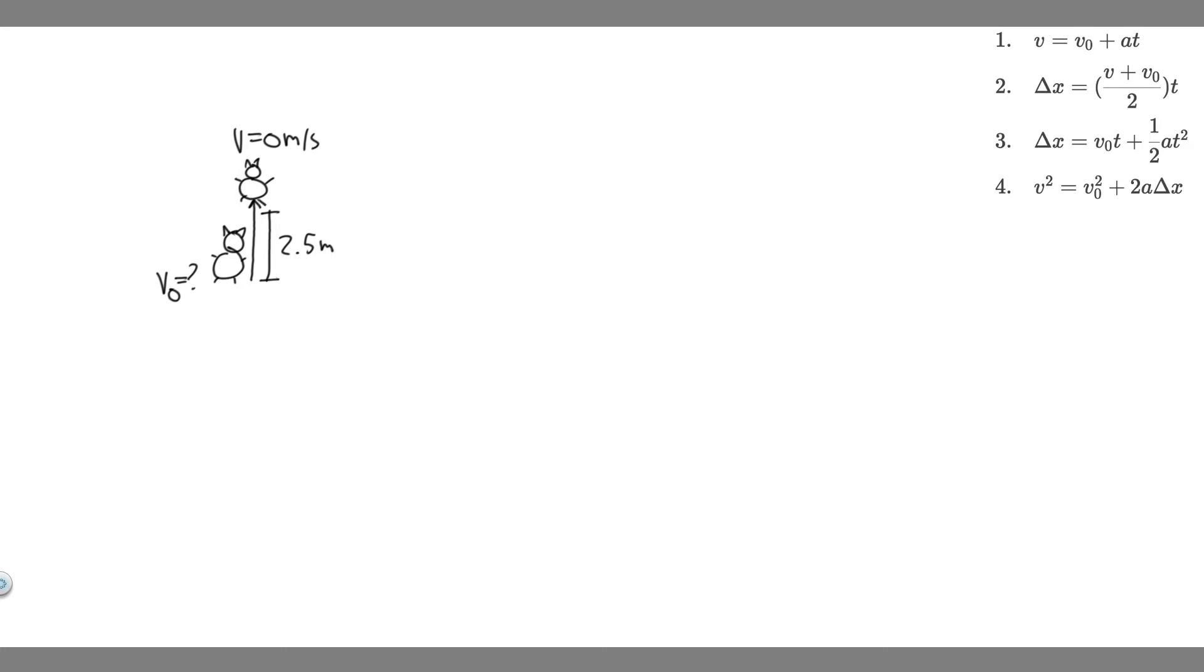That's basically what we know, and so what we want to do is just write down the given. So what information are we given? We're not given the initial velocity. That's what we're going to be solving for. We're given the change in its y, which is basically how high it's going to travel. So we know its change in its position is 2.5 meters, and it's positive because it's going up 2.5 meters.